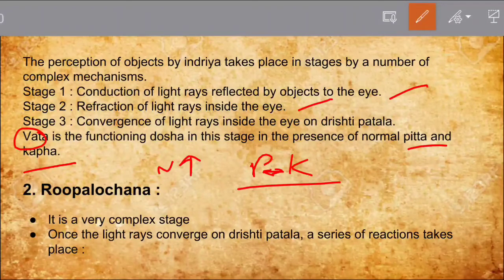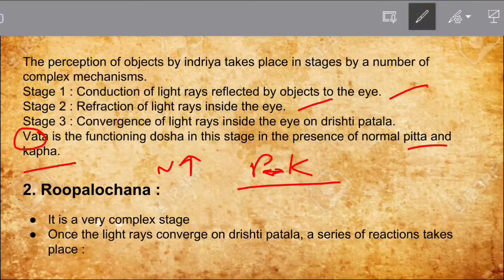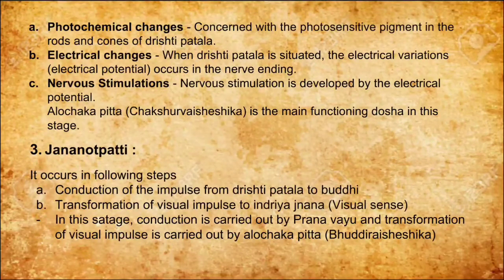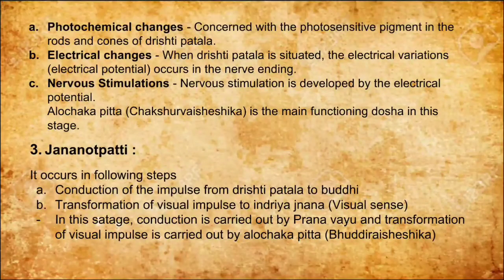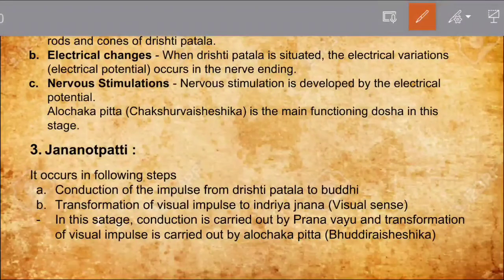The second stage is Rupa Alachanam — a very complex stage. Once the light converges on the Drushtipatala, a series of reactions takes place. The first is photochemical change, concerned with the photosensitive pigment in the rods and cones of the Drushtipatala. The second is electrical changes — when the Drushtipatala is stimulated, electrical variations or electrical potentials occur in the nerve endings, and nervous stimulation is developed by the electrical potential.